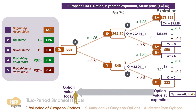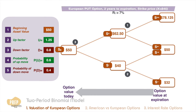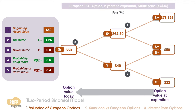Likewise, for the other node we perform the same steps and get a value of 2.804. Back to today, we perform the same steps as another one-period binomial model, which works out to 12.51. This is the no-arbitrage value of the European call option.